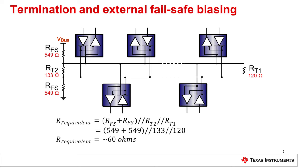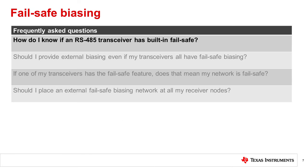External fail-safe resistors can increase noise immunity of the receiver under bus idle, short, and open conditions. An app note on how to calculate the fail-safe resistors and termination resistors is linked below the video. There are two ways to tell if an RS-485 transceiver has a built-in fail-safe. The first way is to check the front of the datasheet, as this is typically listed as a feature. The second way is to check the electrical parameter for the input threshold voltages (V+in and V-in).